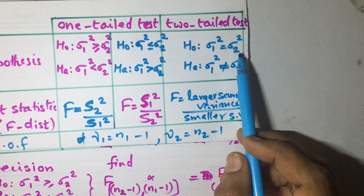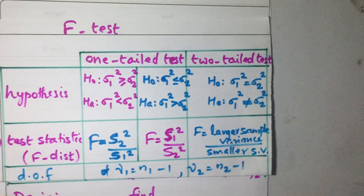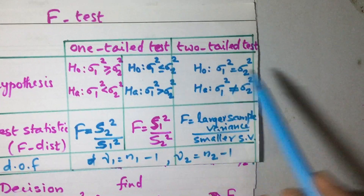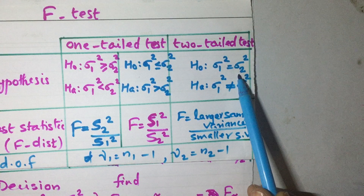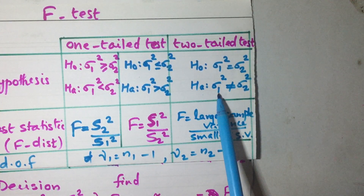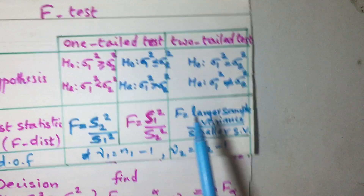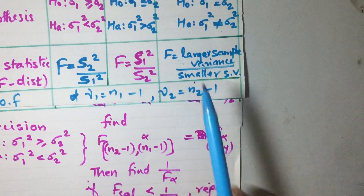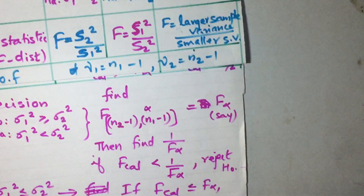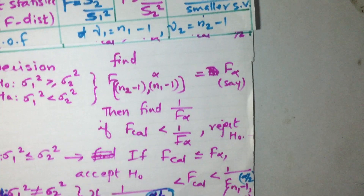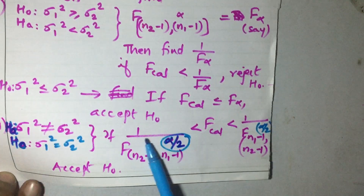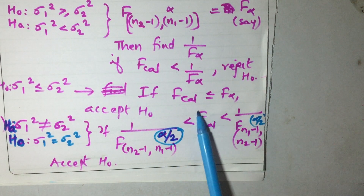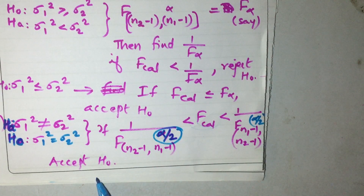Now, all three tests together: if H0 is sigma1 squared equals sigma2 squared and the alternate hypothesis is sigma1 squared not equal to sigma2 squared, this is a two-tailed test. We compute F equal to S1 squared upon S2 squared. In a two-tailed test, we calculate 1 over F(N2 minus 1, N1 minus 1) at alpha by 2 and the upper bound. If the calculated value lies between these two values, we accept H0.